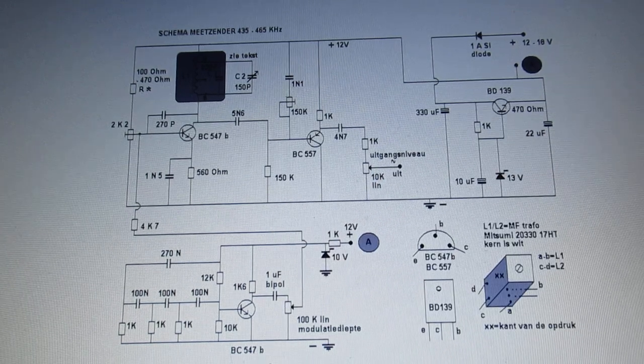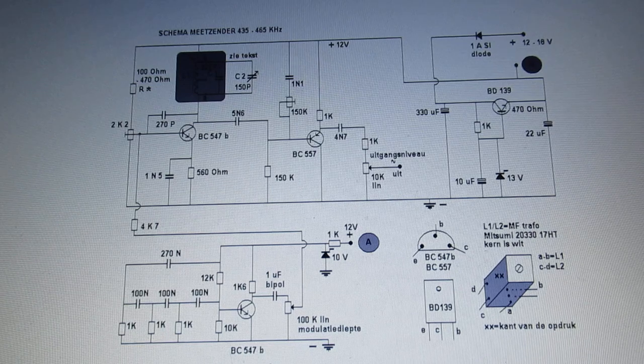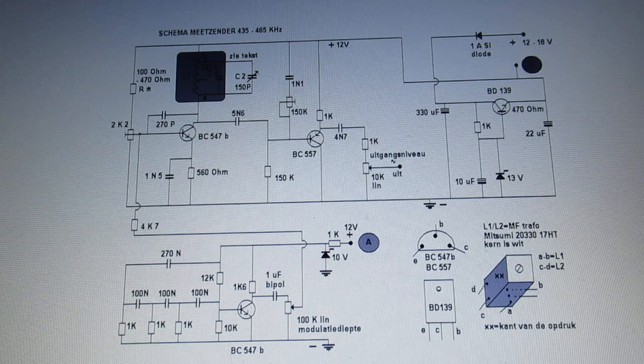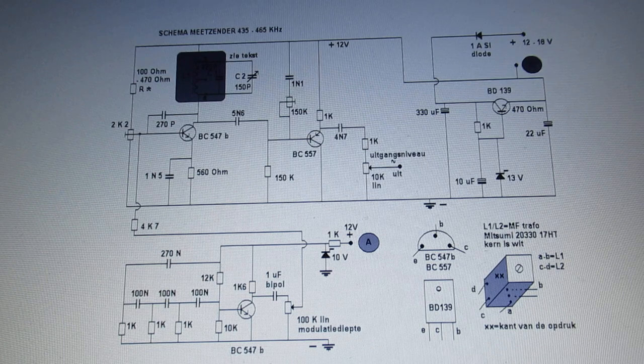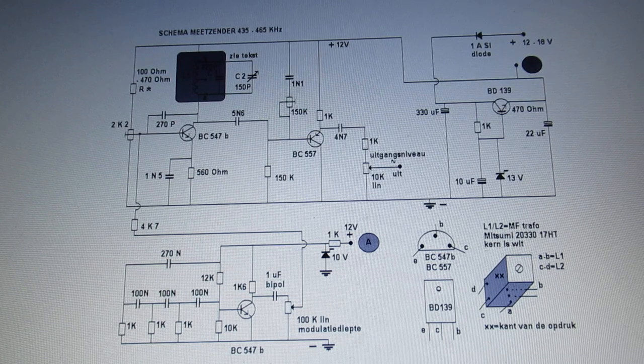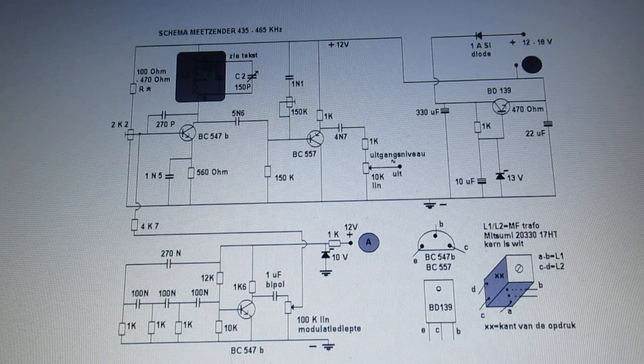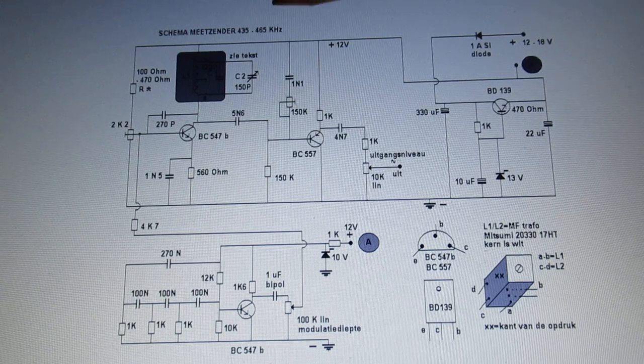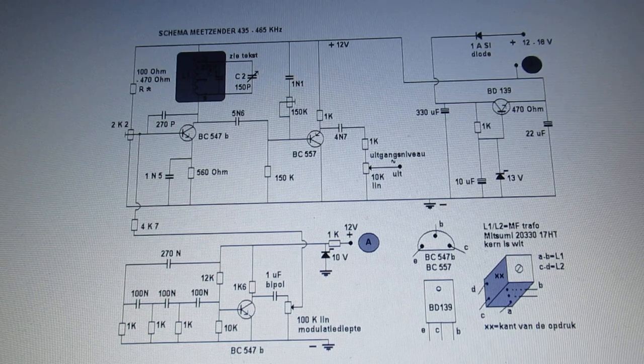They have to be tuned to the exact peak resonance, and all three filters must be tuned to exactly the same frequency. That's often a problem, so for that case you can use this circuit - a measuring transmitter that works in the frequency band from 435 up to 465 kilohertz.